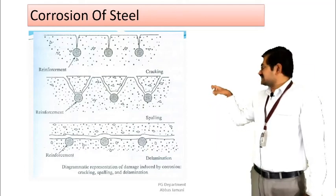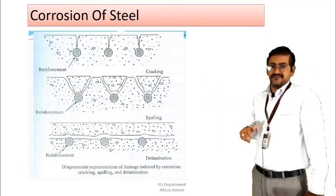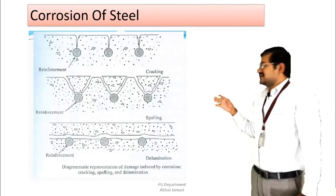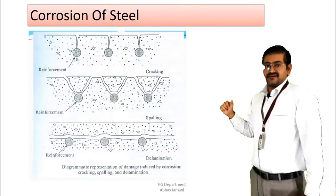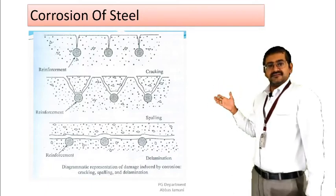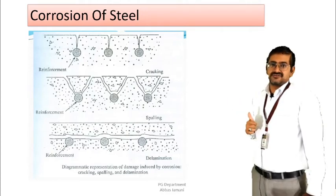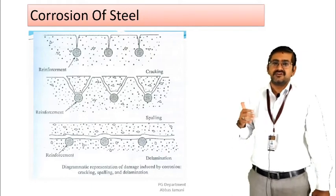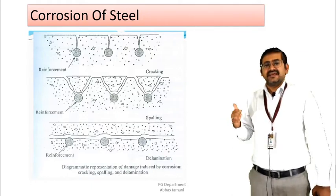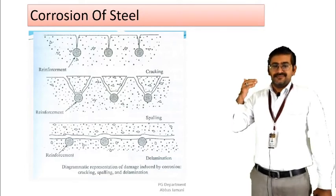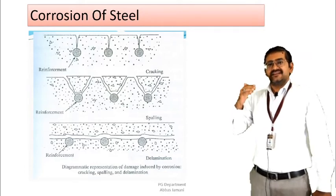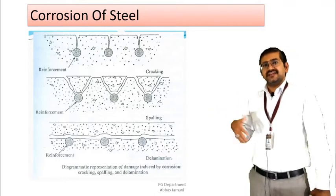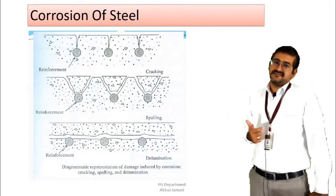As a result, minor cracks will first be observed on the surface. Then slowly the volume increases further, and the spalling of concrete takes place. Later on, the delamination of the concrete also takes place. To summarize the entire process of corrosion of reinforcement: first the passive layer is broken, then the pH value is reduced to below 8.3, then there is increase in volume, due to which cracking takes place, followed by spalling of concrete, and lastly delamination of the surface.